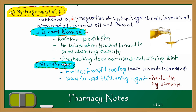Next, hydrogenated oils. Hydrogenated oils are basically vegetable oils such as arachis oil, cottonseed oil, coconut oil, and palm oil — like groundnut oil. Hydrogenated oil is used due to its resistance to oxidation, no lubrication needed for the mold, good absorbing capacity, and overheating does not affect the solidifying point. Because it has oil content, it will not stick to the mold, and its absorbing capacity is very good.